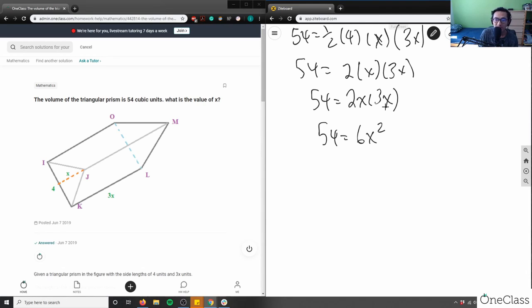I can divide both sides by 6. So 54 divided by 6 is 9 equals x squared. Square root both sides, I'm going to get x equals 3. So in this case, the value here is 3.